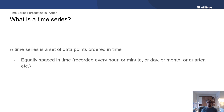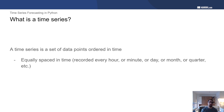We first answer the question: what is a time series? Simply, a time series is a set of data points ordered in time. It is data that was recorded with equal spaces in time — so recorded every hour, minute, day, month, quarter, etc.